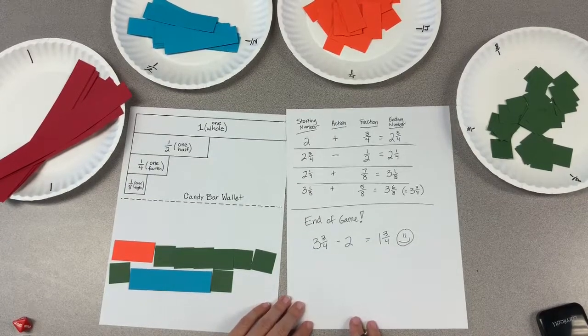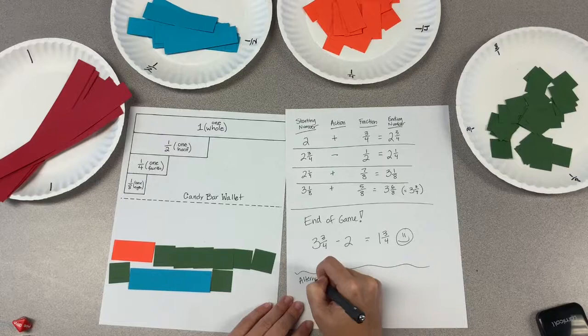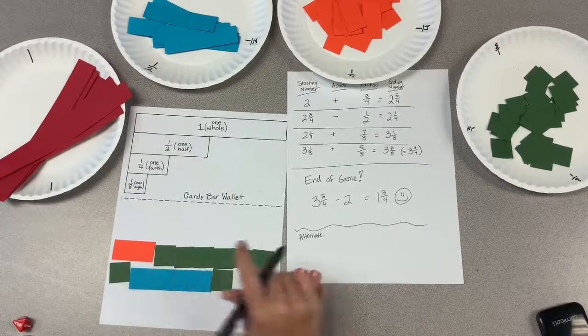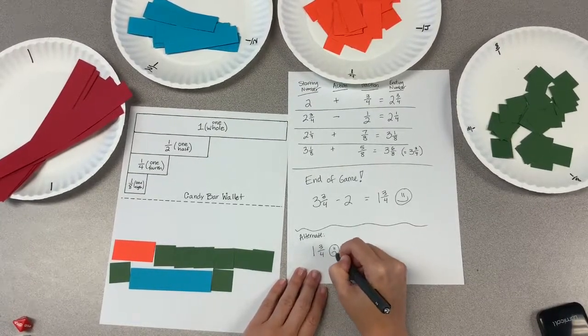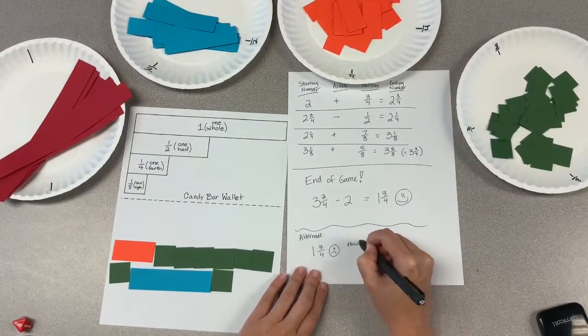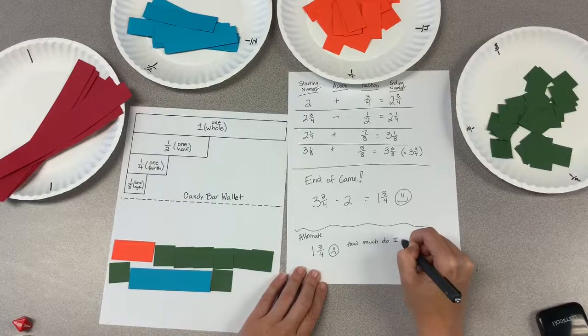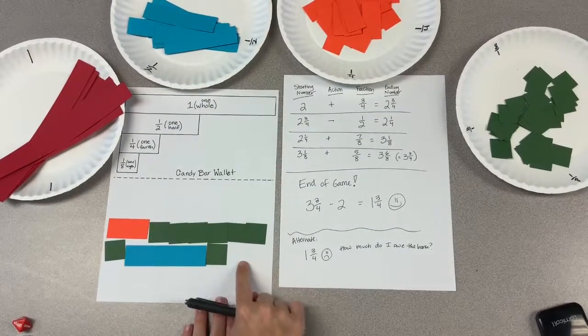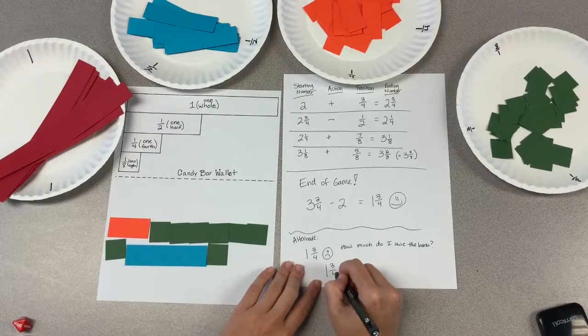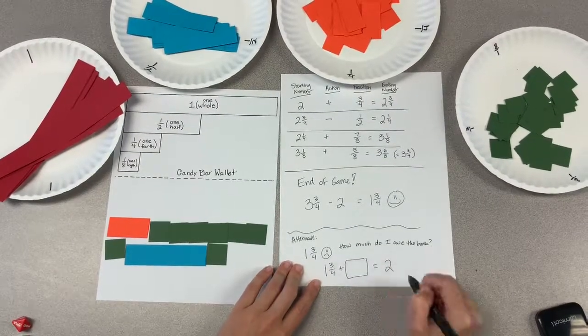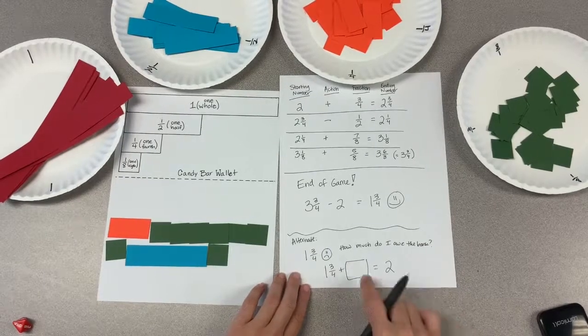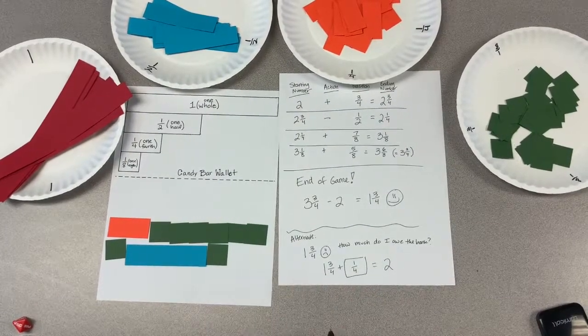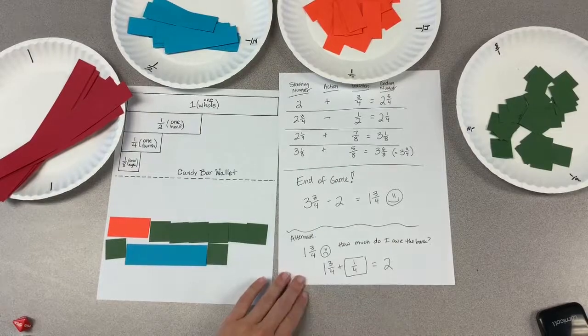If this went differently and I ended with less, say I actually only ended with one and three fourths, I might ask students, how much do I owe the bank? In which I'm now asking students to find out how much more do I need to get to that two that I originally owed. This essentially is subtraction or missing addend. We're building in a lot of conceptual understanding to practice before going into the procedure.